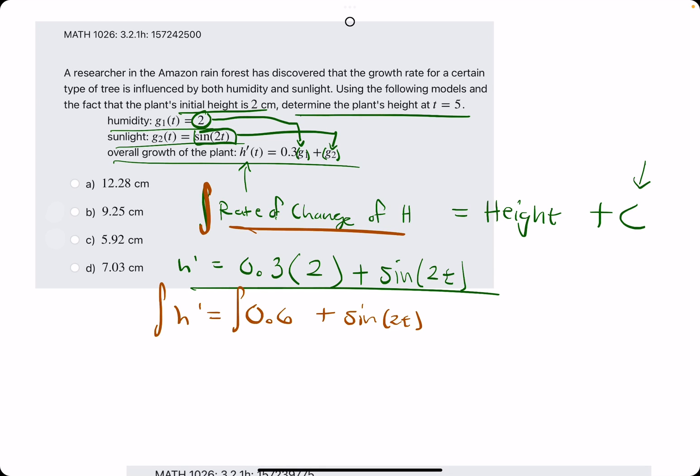If we take the antiderivative, we will get 0.6t, and then plus the antiderivative of positive sine is negative cosine of 2t. And then, because the inside is 2t, we must divide by 2, because we're always dividing by whatever the derivative of the inside is. And then we say plus C.